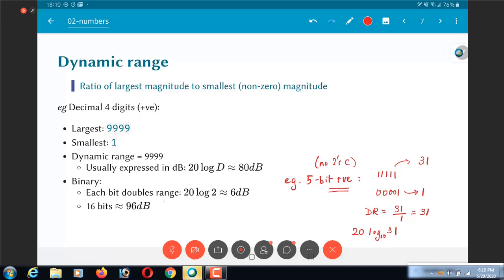So effectively what we have is that if you do the computation, you will find that for every additional bit that you have, you are doubling the range of numbers that can be represented, which basically means doubling the dynamic range. So every bit in other words contributes 20 log 2 to the dynamic range, which is basically 6 decibels, because log 2 is 0.30 or something, so 20 times that is 6 dB.